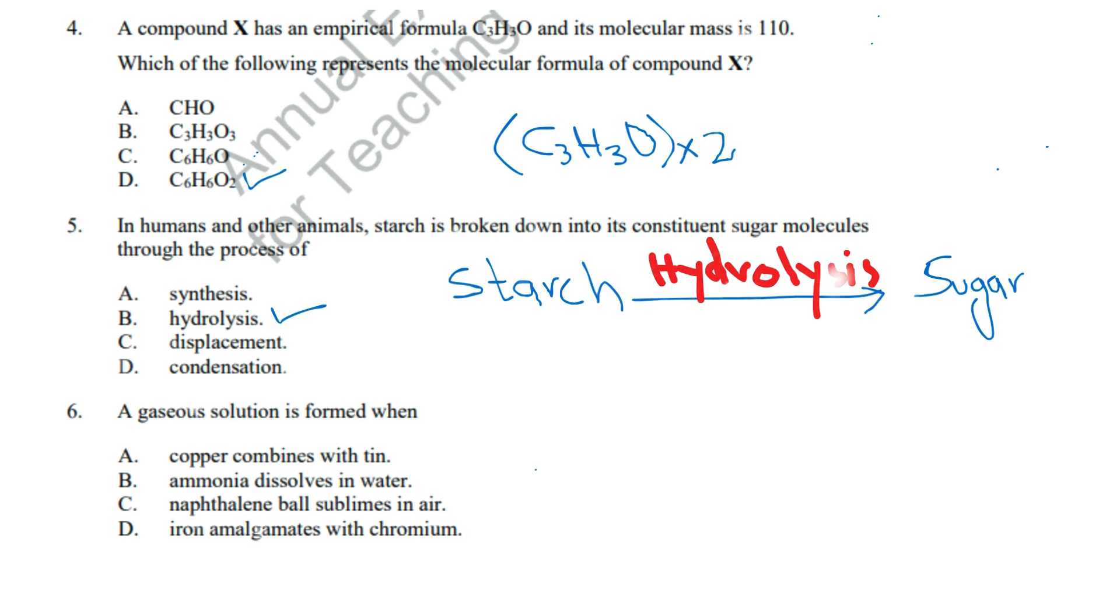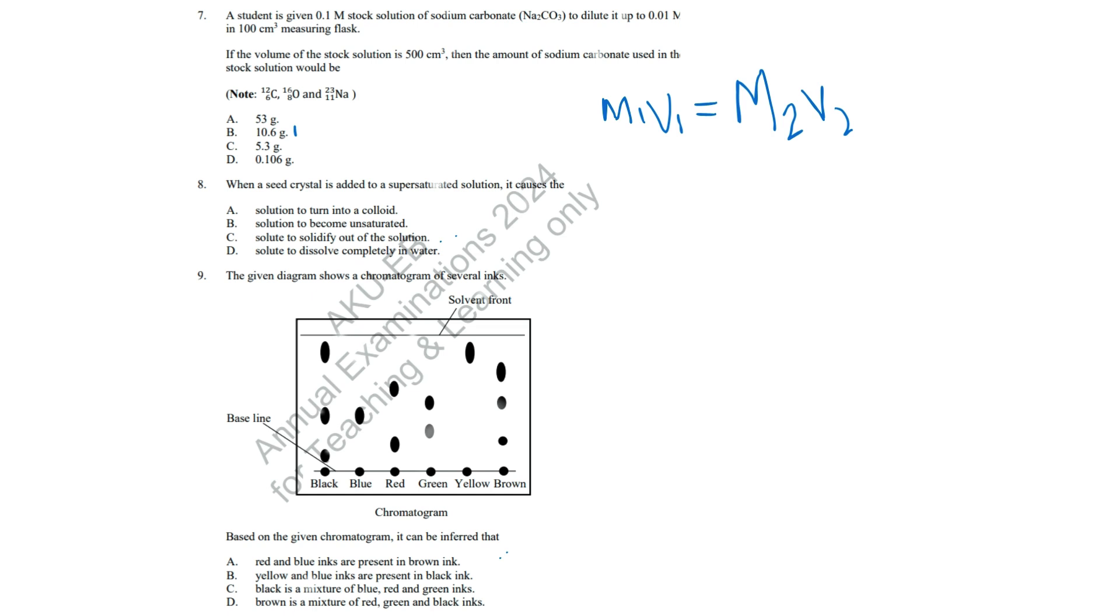Question 6: Naphthalene undergoes sublimation, forming a gaseous solution. Correct answer: C, Naphthalene ball sublimes in air. Question 7: Using the dilution formula M1V1 equals M2V2, the required sodium carbonate is 10.6 grams. Correct answer: B, 10.6 grams.